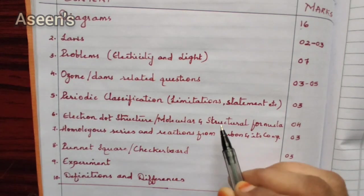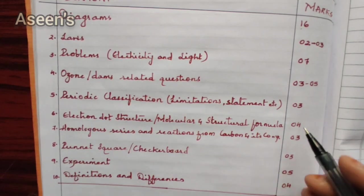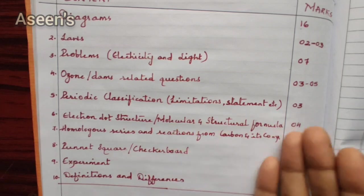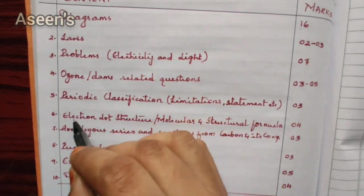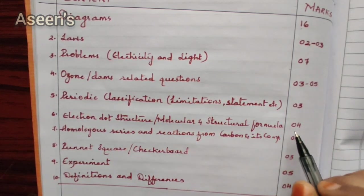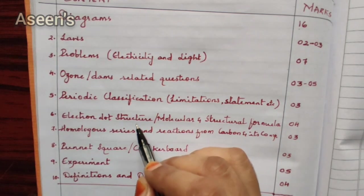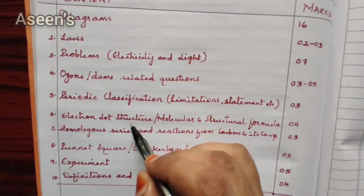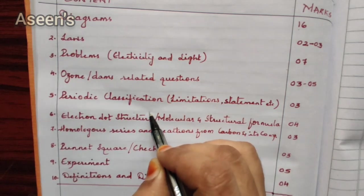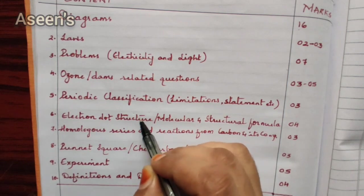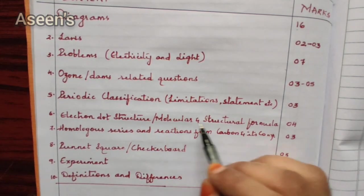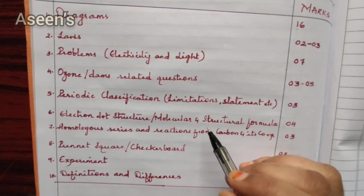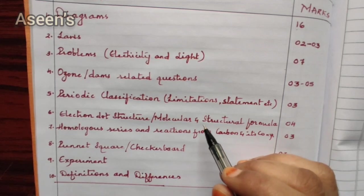Next are questions related to electron dot structure, molecular formula, and structural formula. Together these account for four marks. They might ask electron dot structure alone, or molecular and structural formulas only. Electron dot structures are needed for covalent compounds — covered under carbon and its compounds — as well as for ionic compounds, covered under metals and non-metals. I have already done separate videos on these topics and will leave links in the description box.